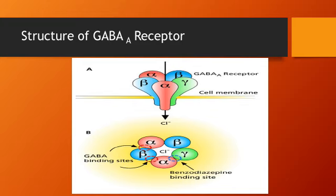This GABA-A receptor has attachment sites for the endogenous GABA. GABA is basically an inhibitory neurotransmitter in the central nervous system. Its binding site lies at the interface between the alpha and beta subunits. If we talk about the benzodiazepine binding sites, it lies at the interface between the alpha and gamma subunit — more specifically, at the interface between the alpha-2 and the gamma-1 subunit.